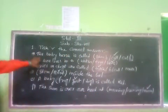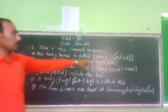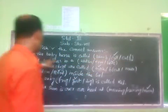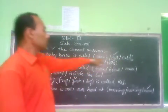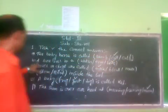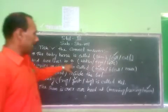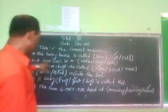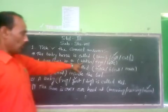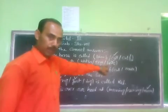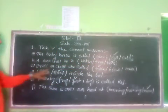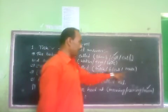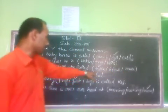Once again: the baby horse is called calf — lamb, colt, calf. A bee lives in a water, tree, or hay. Cries of dogs are called bark, bleat, or roar — bark.